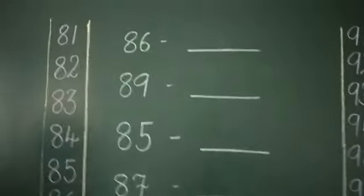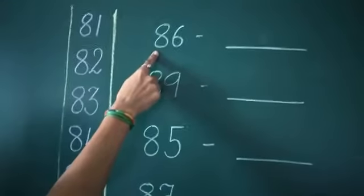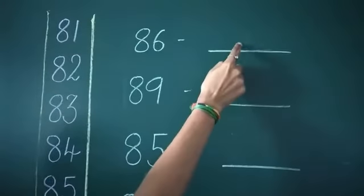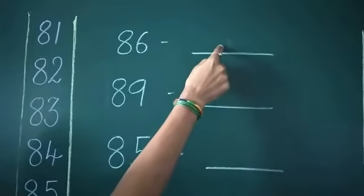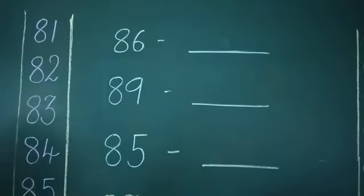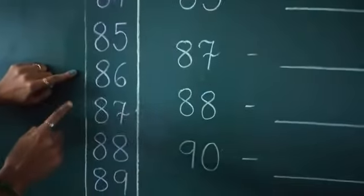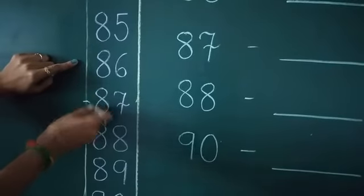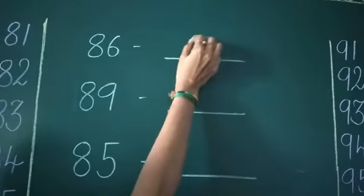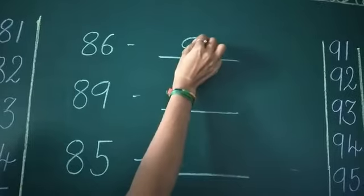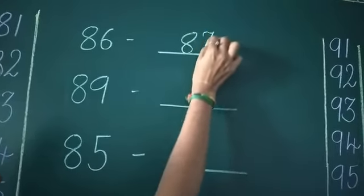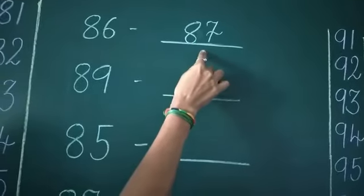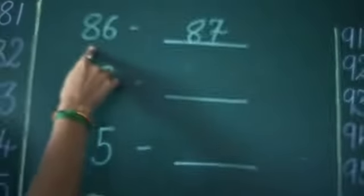So let's try. First is number 86. Which number comes after? Look at here — number 86. Which number comes after? 87. So number 87 comes after number 86.